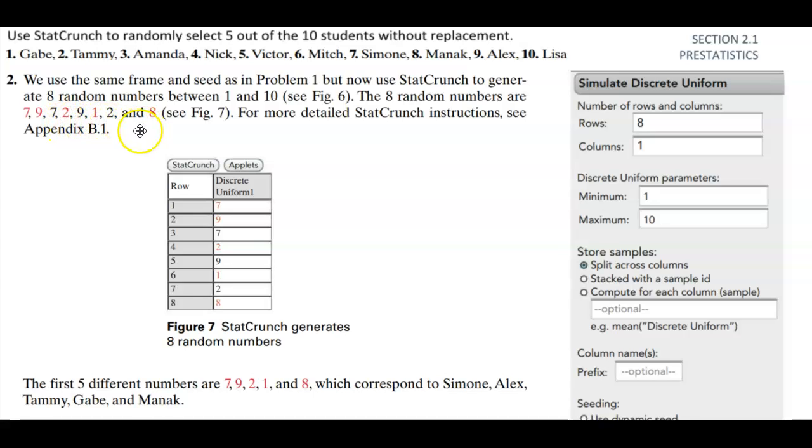Remember that we want to select five out of the students, so we don't want to pick anything repeating. We pick 7, 9. We're not going to select this 7 because it's repeating. We're going to pick 2. We're not going to pick that 9 because that's repeating and then the 1. We're not going to pick that 2 because that's repeating and then we're going to pick number 8.